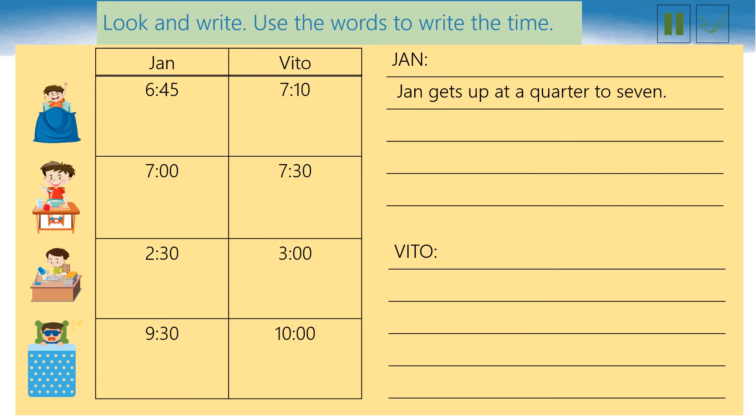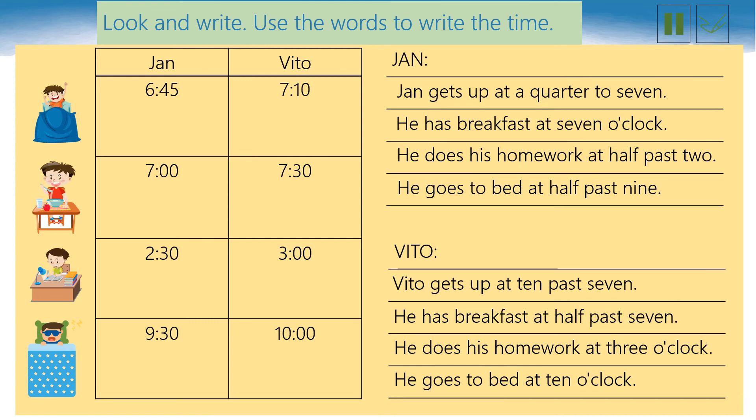And we are back. Let us read about Jan and Vito. Jan gets up at a quarter to seven, has breakfast at seven o'clock, does his homework at half past two, and goes to bed at half past nine. And what about Vito? Vito gets up at ten past seven, has breakfast at half past seven, does his homework at three o'clock, and goes to bed at ten o'clock.